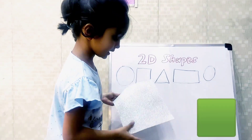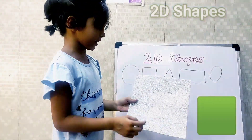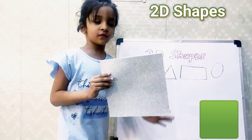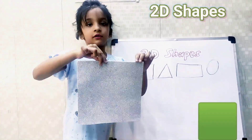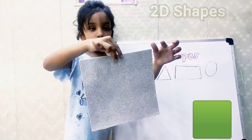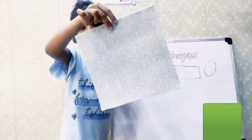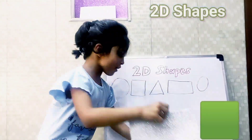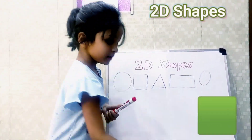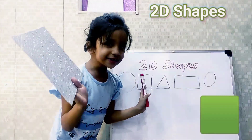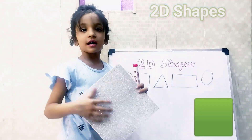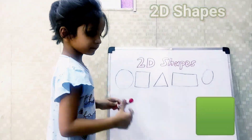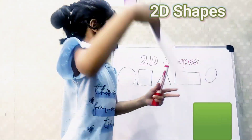This shape has 4 sides — all equivalent. 1, 2, 3, 4. It has 4 sides. Our square has 4 sides, all equivalent.